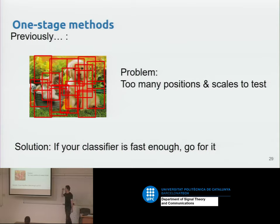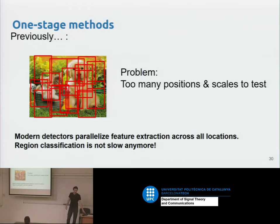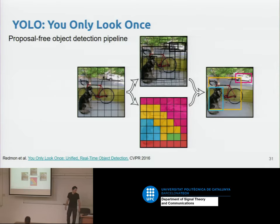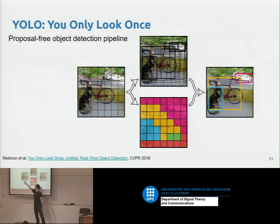Now let's look at proposal-free methods. We had the problem of too many bounding boxes and insufficient computational capacity, but hardware has improved a lot and can now parallelize the computation.